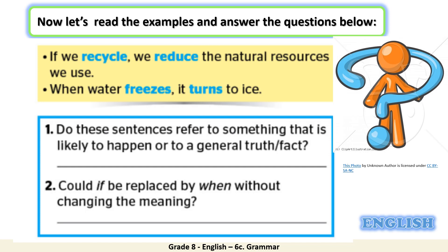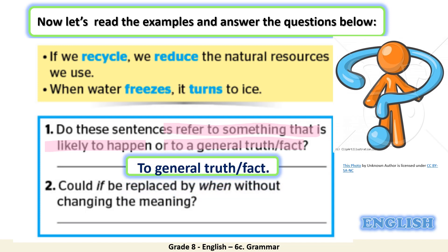Let's read the examples and answer the questions below. If we recycle we reduce the natural resources we use. When water freezes it turns to ice. Question number one: do these sentences refer to something that is likely to happen, something that might happen or might not happen, or to a general truth or fact? Let's read again example number two: when water freezes it turns to ice. Is it possible that when water freezes it doesn't turn into ice? Of course not. Then it refers to a general truth or fact.